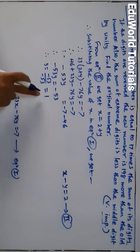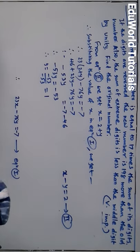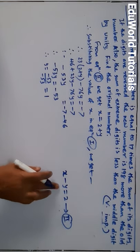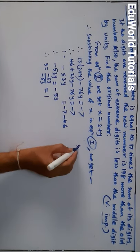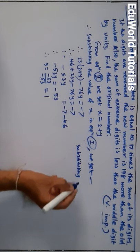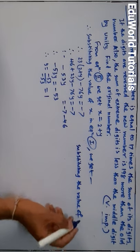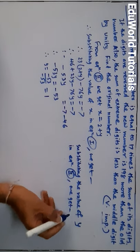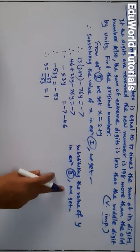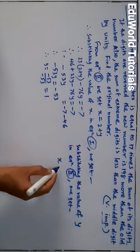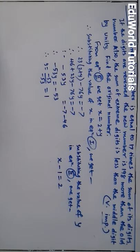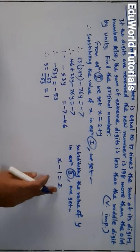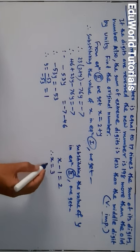Now substituting y = 1 into equation 2: x minus y = 2, so x minus 1 = 2, which gives x = 2 + 1 = 3. This is the units place digit, as we had defined at the beginning of the problem.